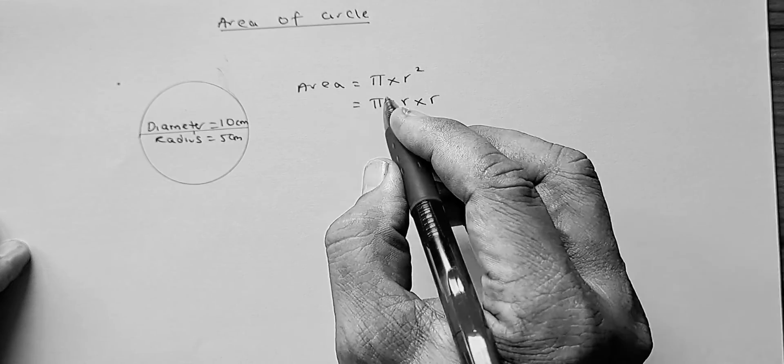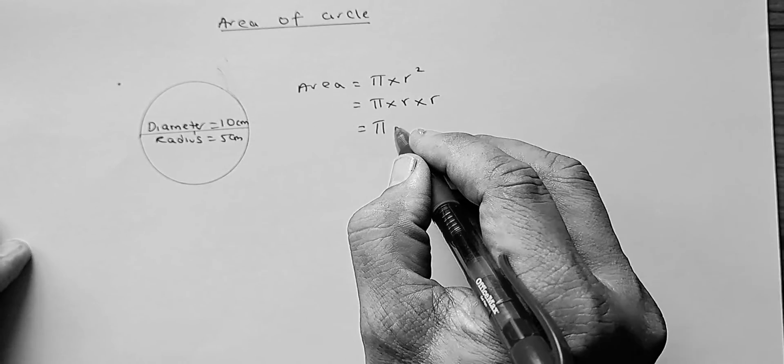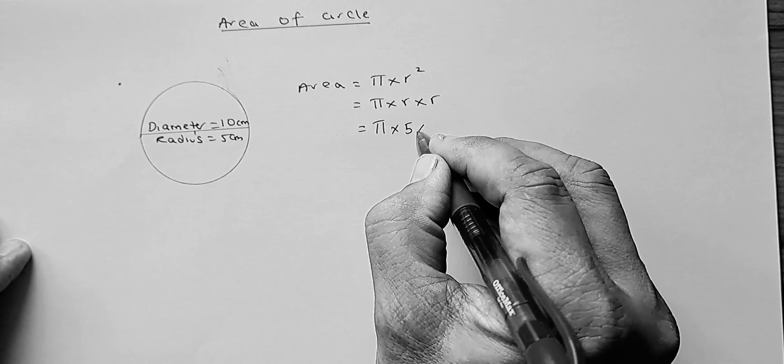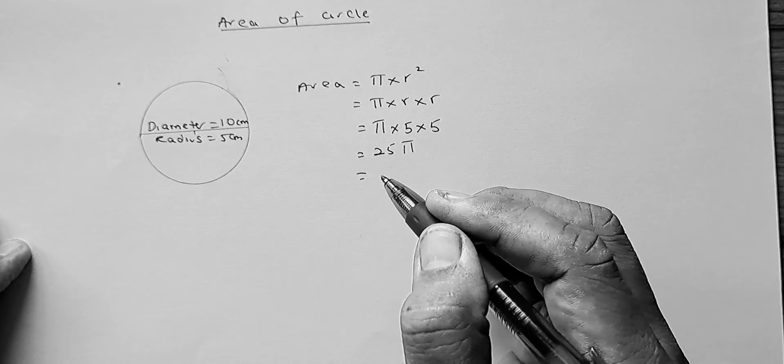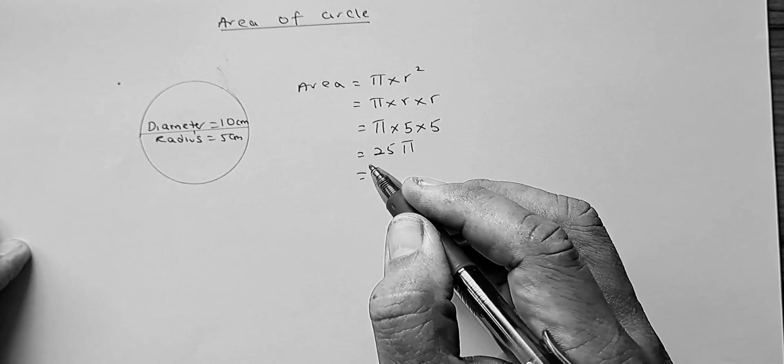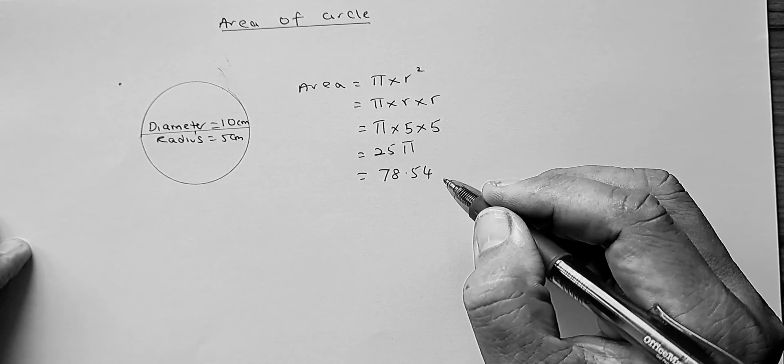So, to calculate the area, it's pi times radius times radius. If the radius is 5, you just multiply by 5 and 5 twice and the answer is 25 pi. And if you put in your calculator, the answer is going to come up with 78.54 cm squared.